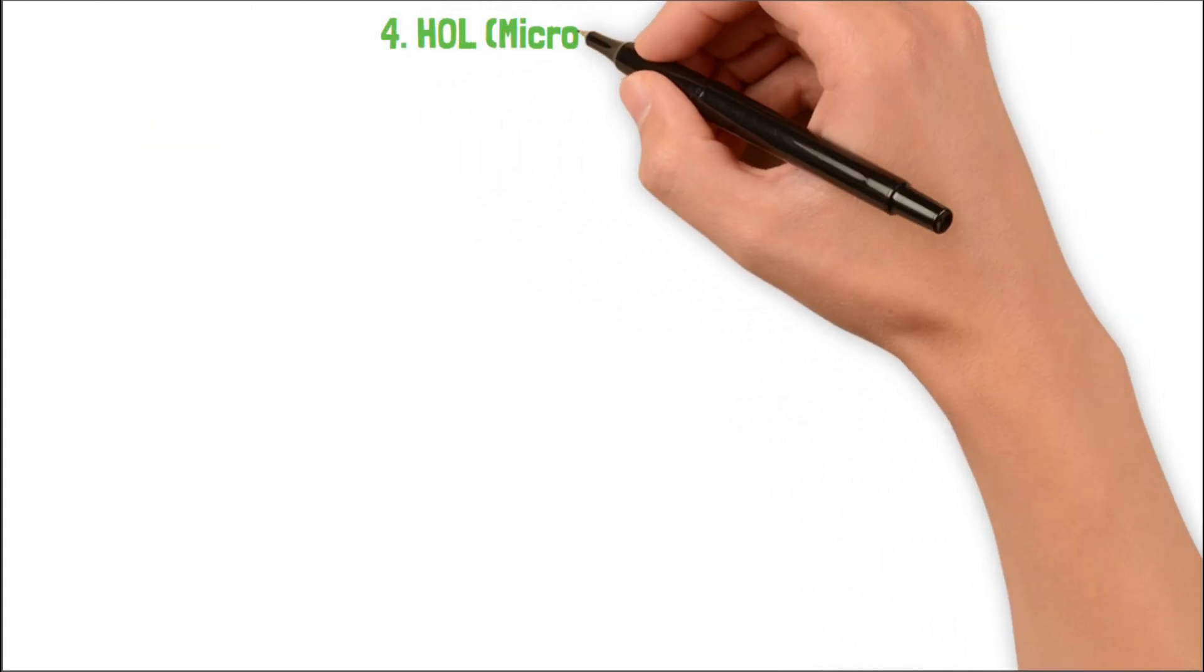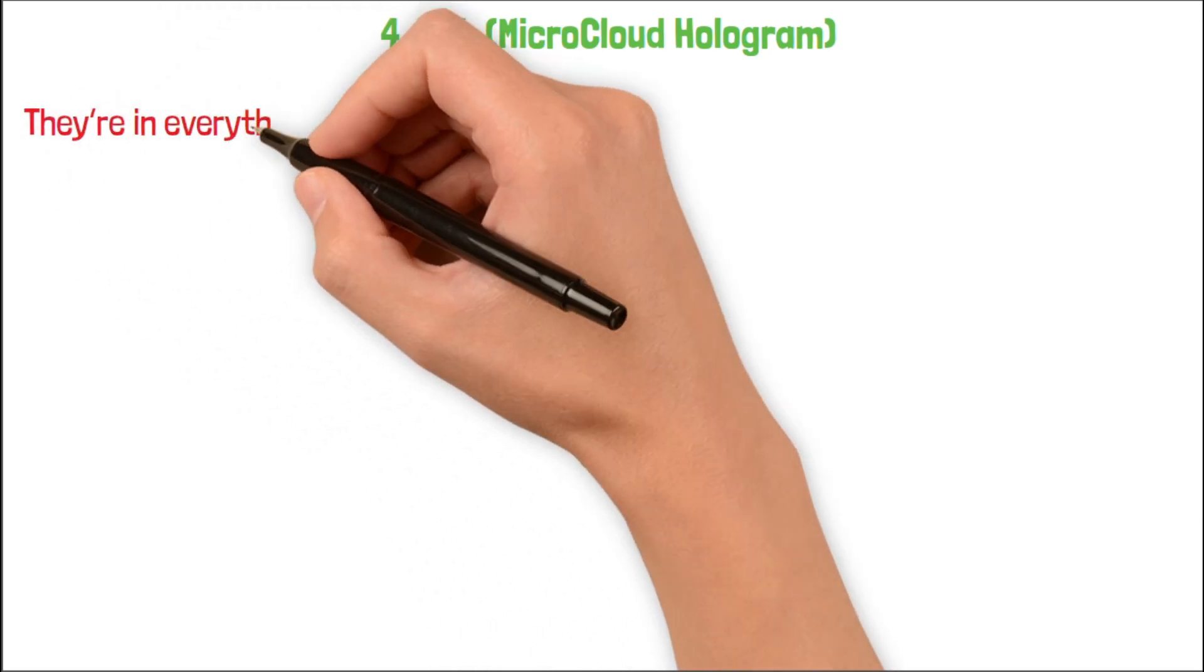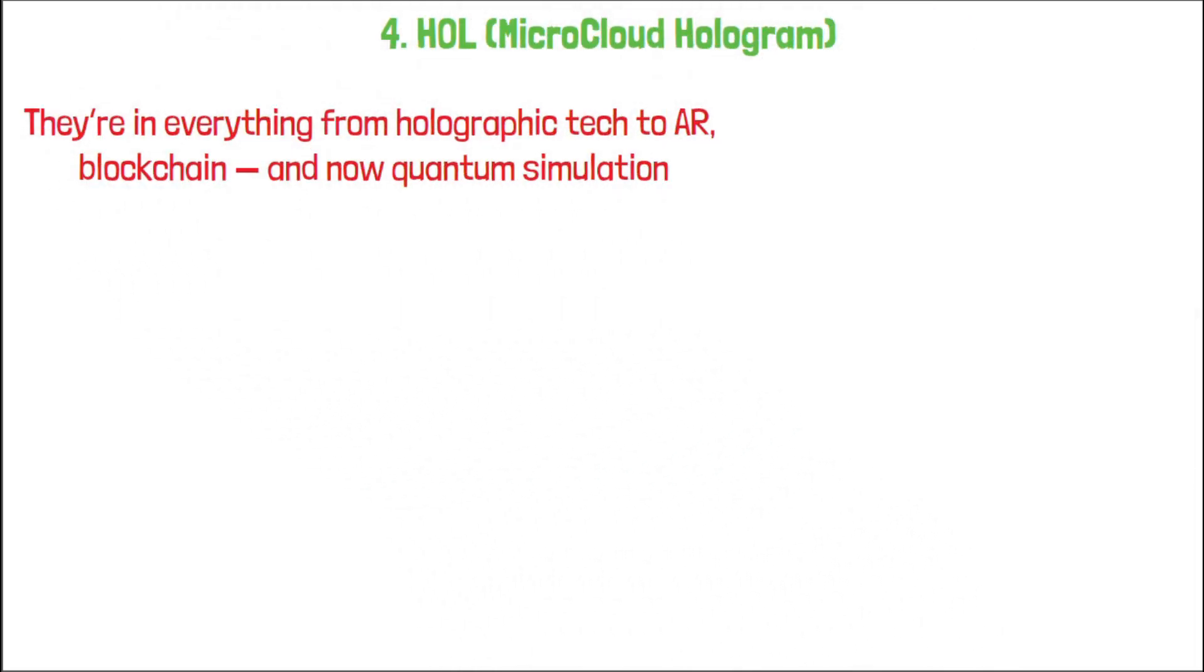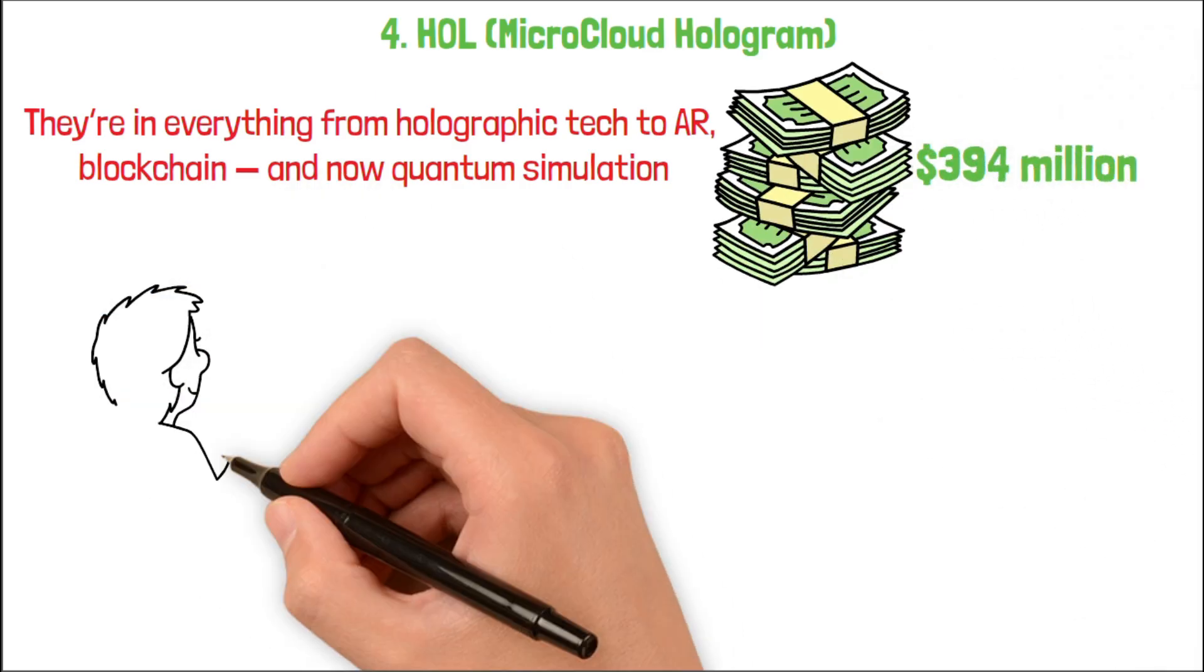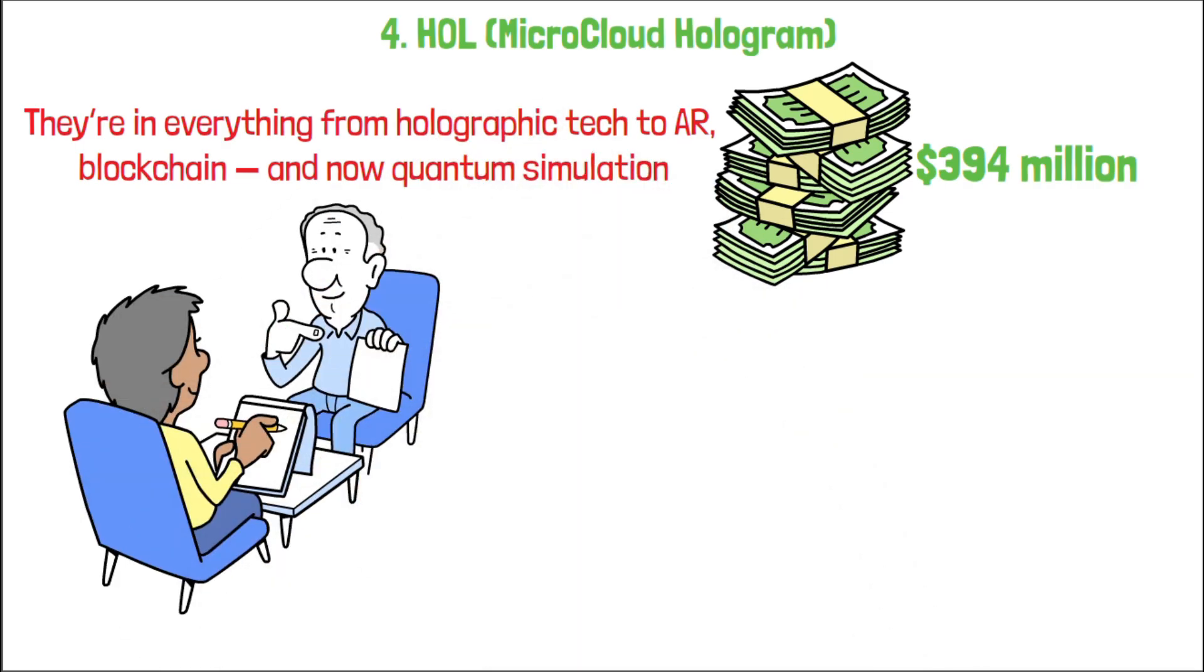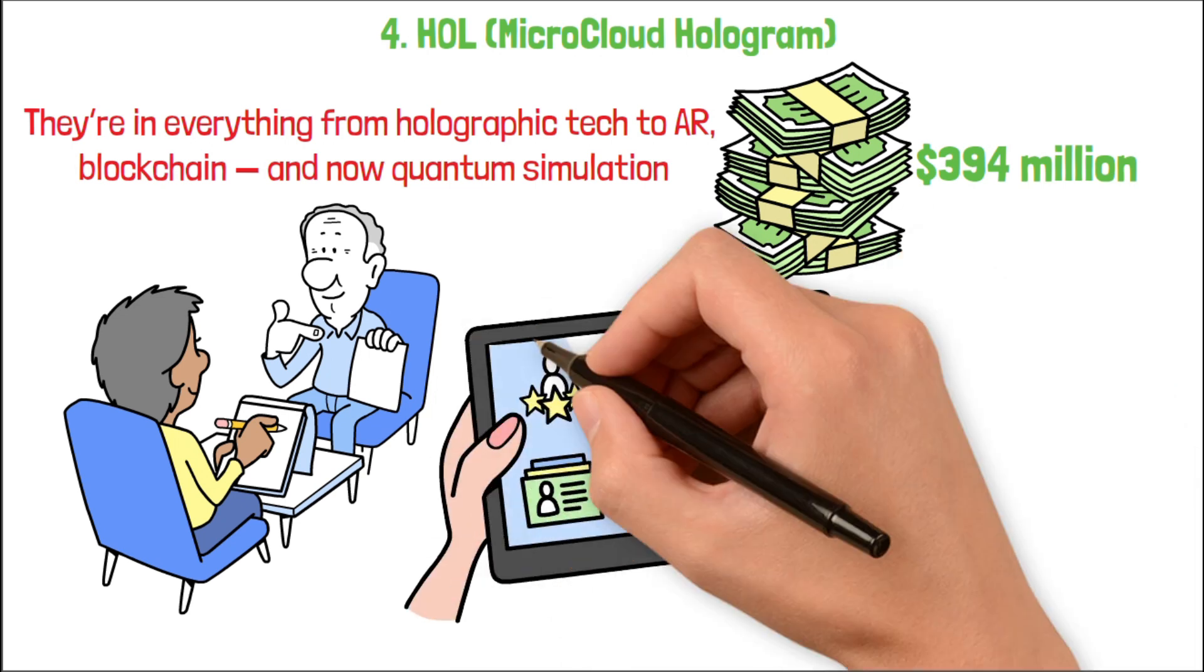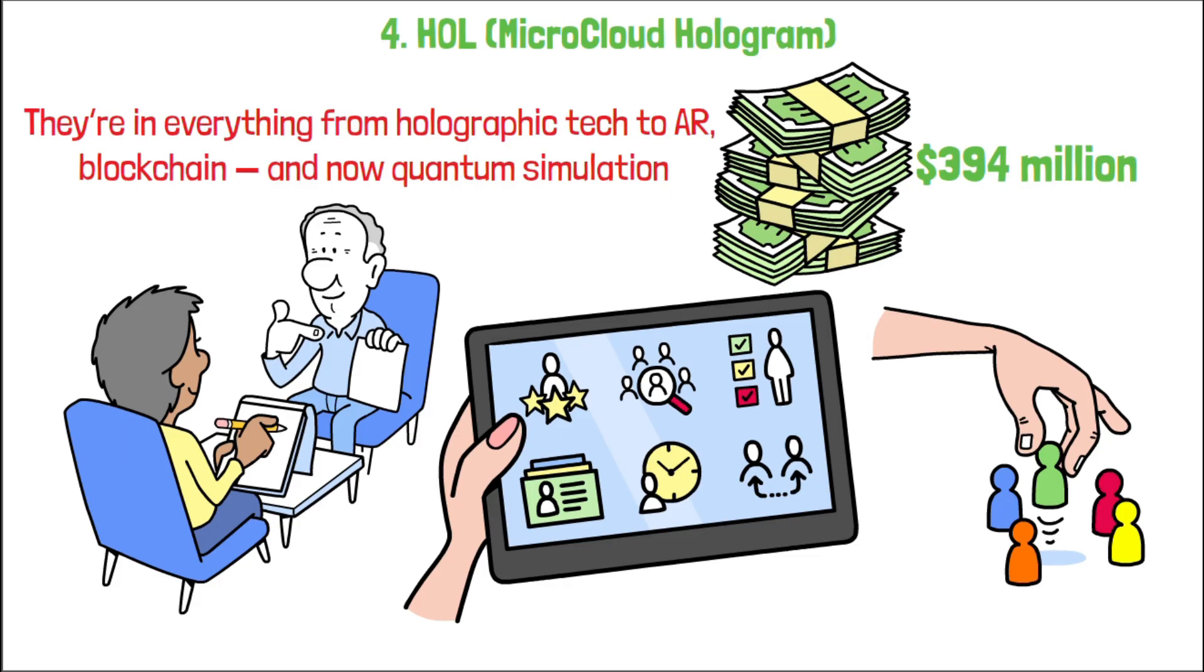And finally, HOL Microcloud Hologram. This one's wild. They're in everything from holographic tech to AR blockchain and now quantum simulation. They've got $394 million in cash, which is rare for a penny stock. But credibility? Thin. Lots of press releases, few peer-reviewed results. Still, if even one of their quantum claims, like cutting simulation costs by 50%, proves true, this could be a dark horse winner.